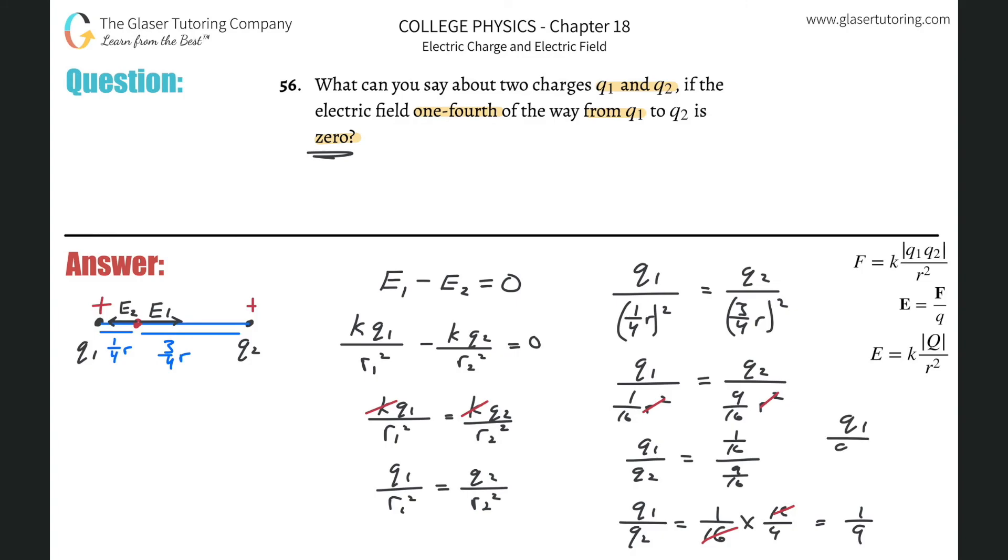And what we realize now is we have this nice little relationship of one over nine. So basically, Q1 relative to Q2 will be one ninth. Or in other words, the value of Q2 should be nine times larger than the value of Q1. That's what it means.